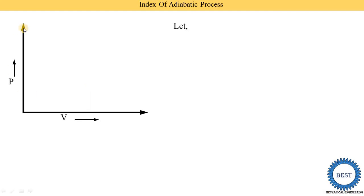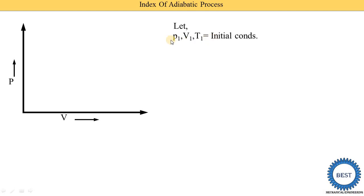Here you see this is the diagram of pressure versus volume — on the x-axis volume is there, on the y-axis pressure is there. P1, V1, T1 indicates the initial condition, where P means pressure, V means volume, and T means temperature. This point on the diagram indicates the initial state.